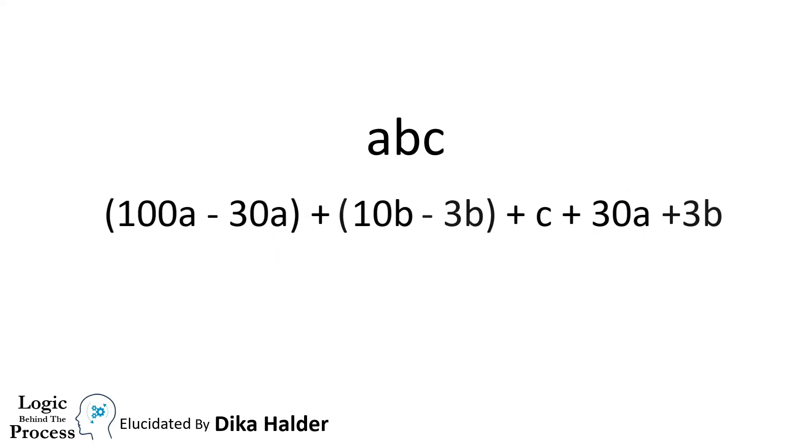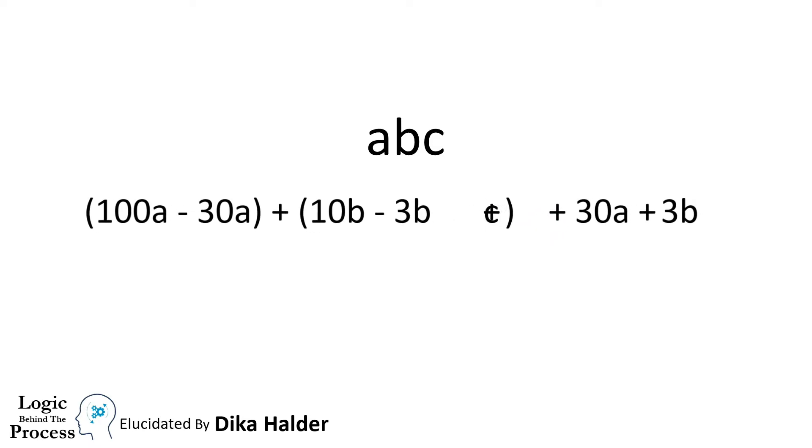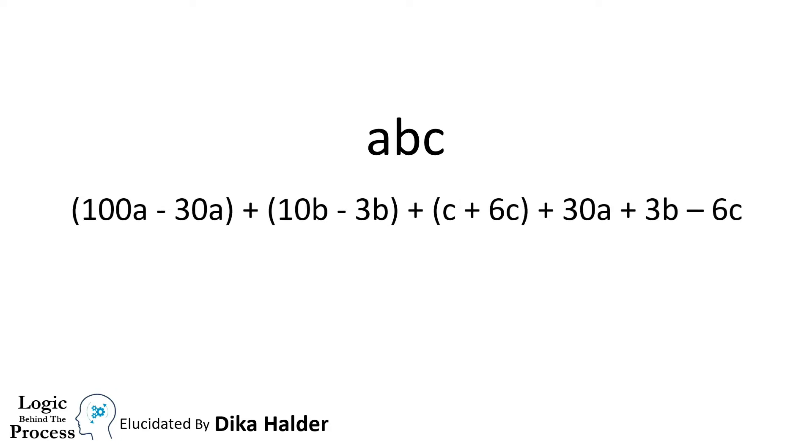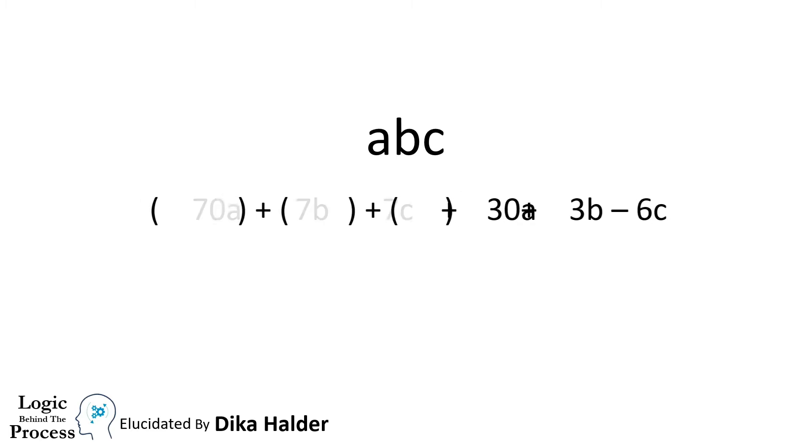Likewise, we shall subtract 3b from 10b then add 3b. For c, we shall add 6c and then subtract 6c. Now from this we can get this expression. All these terms are divisible by 7 as they are multiples of 7. Now all our focus is on this remaining part.